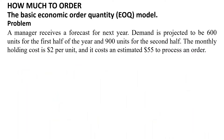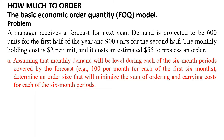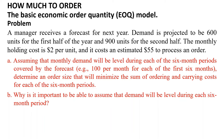Another problem. A manager receives a forecast for next year. Demand is projected to be 600 units for the first half of the year and 900 units for the second half. The monthly holding cost is $2 per unit, and it costs an estimated $55 to process an order. Assuming that monthly demand will be level during each of the six-month periods covered by the forecast — for example, 100 per month for each of the first six months — determine an order size that will minimize the sum of ordering and carrying costs for each of the six-month periods.